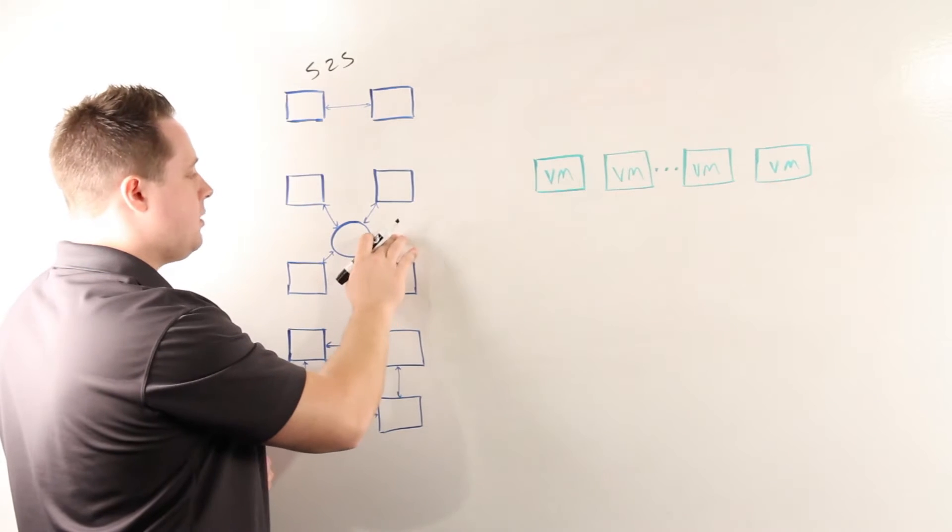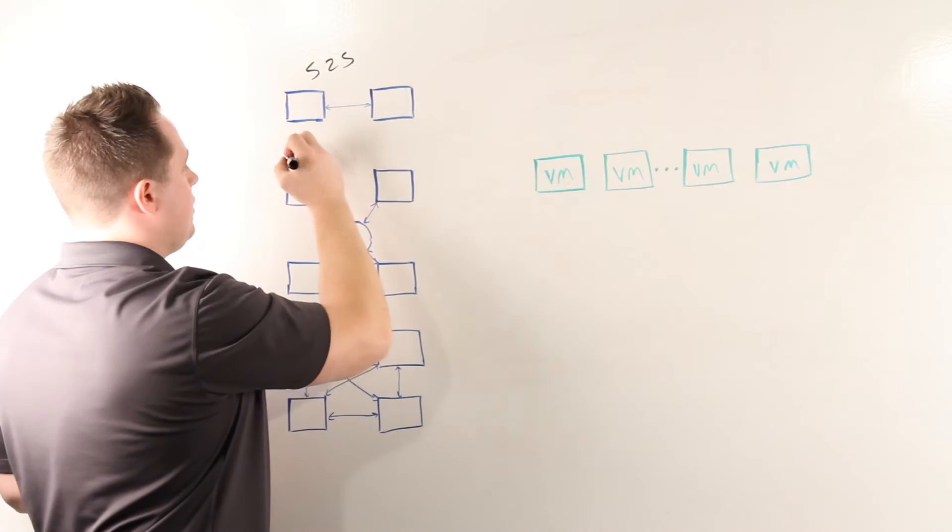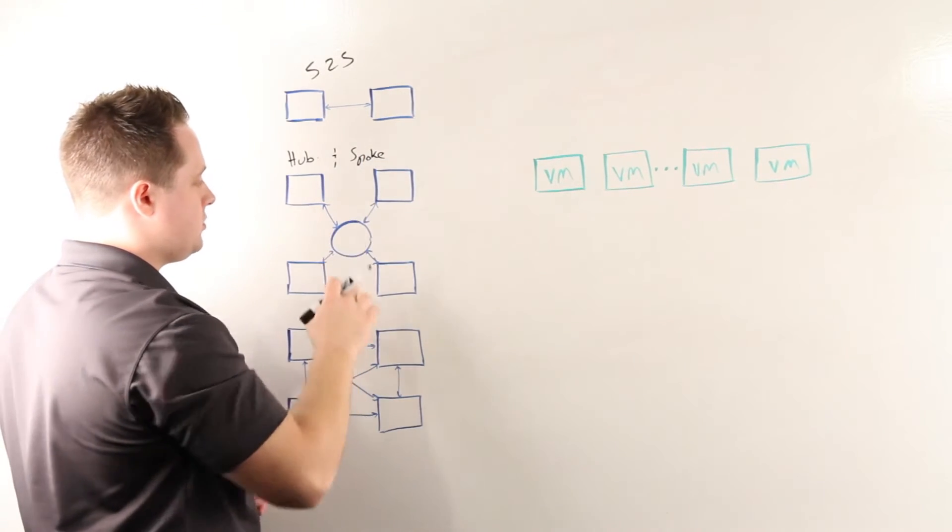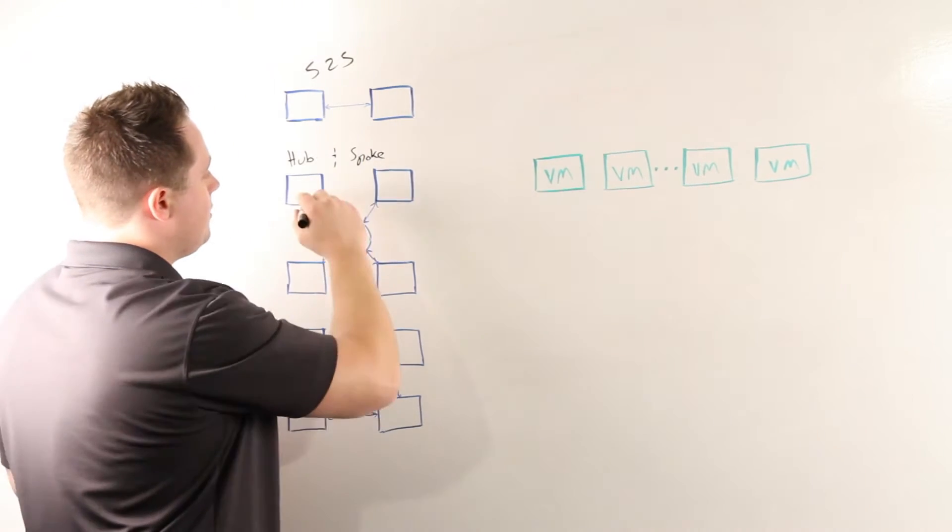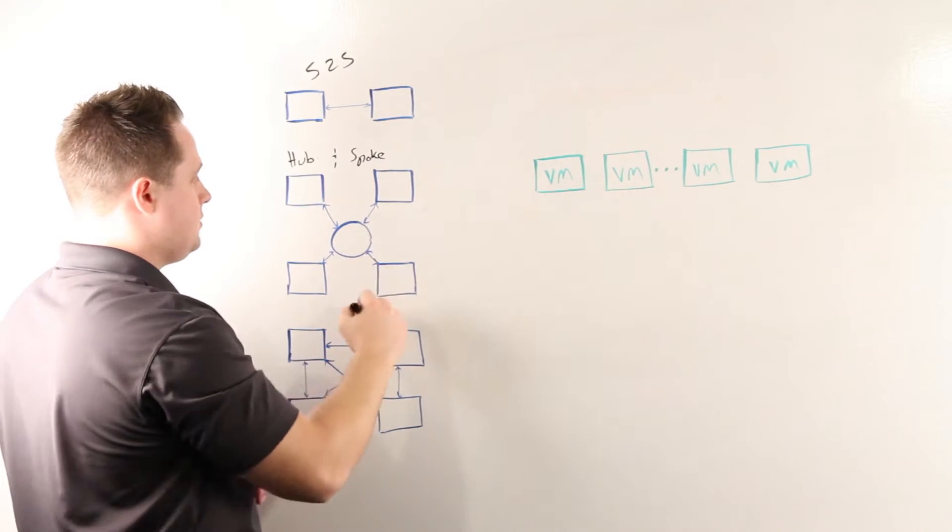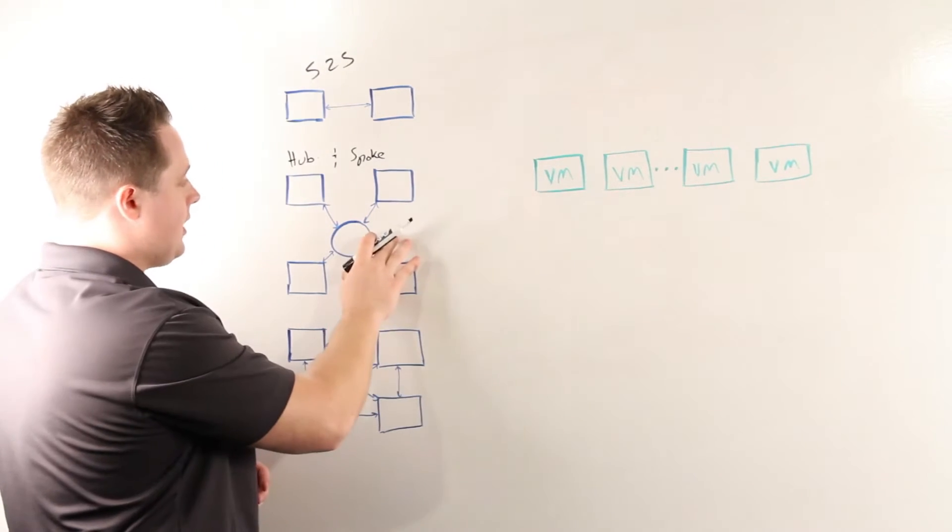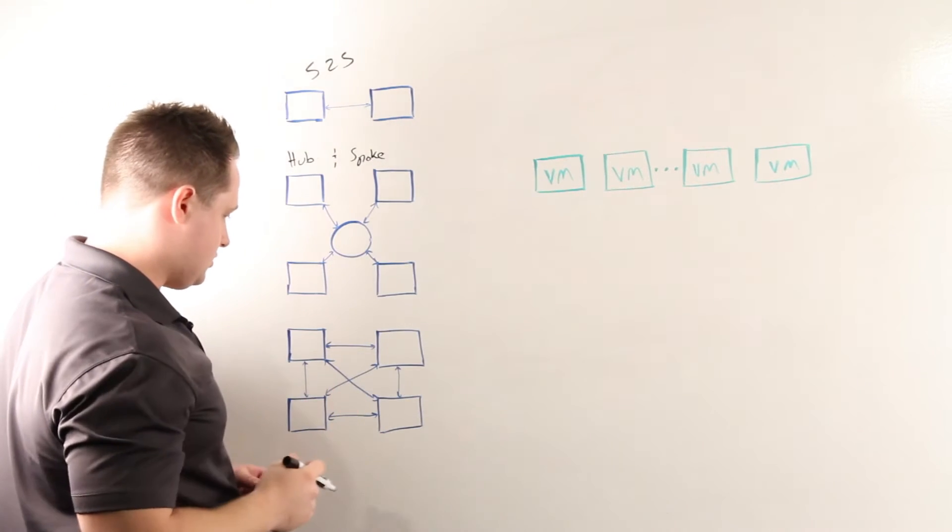The second, which is probably one of the most common, is what we call hub-and-spoke. Essentially, you have one central data center or central site which acts as the spoke, and then multiple branch or regional sites which replicate centrally to that spoke. This is probably one of the most frequently leveraged replication topologies in the industry today.